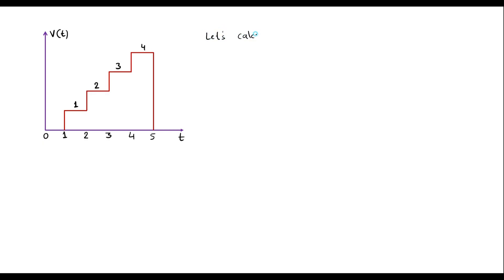Let us calculate the Laplace transform of the given waveform. From this waveform we can see that a step signal begins at t equal to 1 and ends at t equal to 2, and its magnitude is 1. Similarly, another step signal begins at t equal to 2 and ends at t equal to 3, and its magnitude is 2 volts. Another step begins at t equal to 3 and ends at t equal to 4, its magnitude is 4. The last step begins at t equal to 4 and ends at t equal to 5, its magnitude is 4. So first let me represent this waveform in terms of unit step signals.